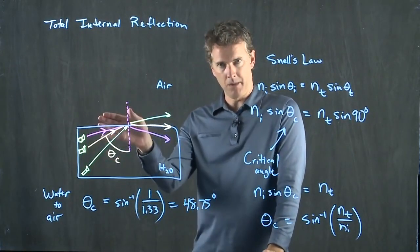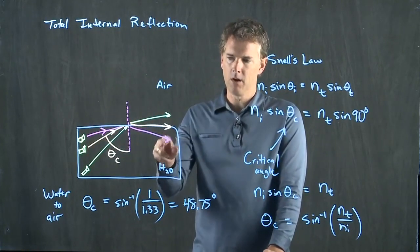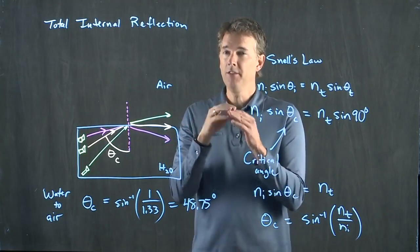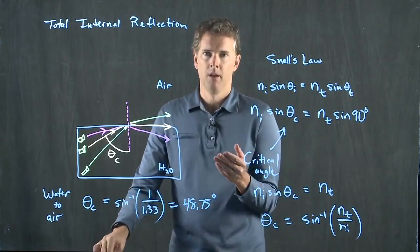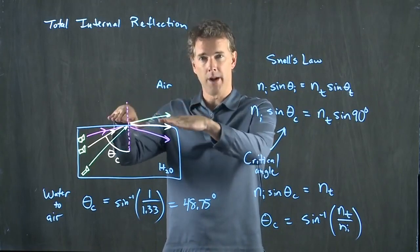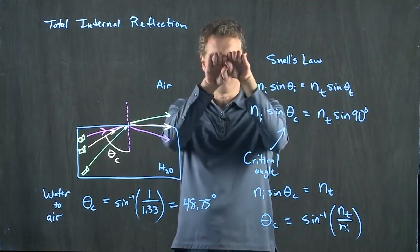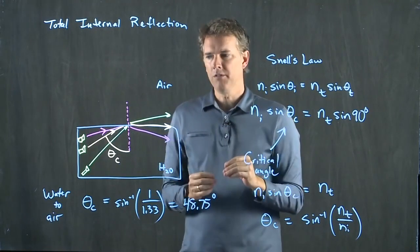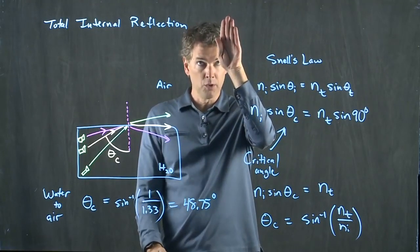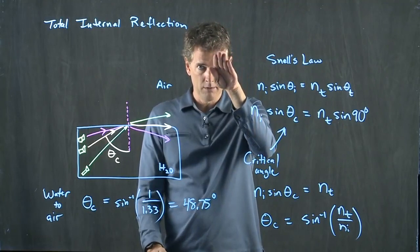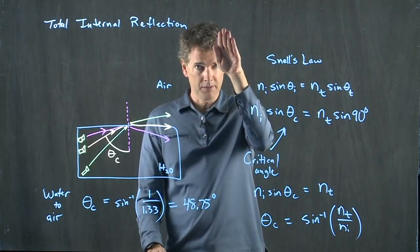Anything higher than that, namely the pink one, you don't have the light exiting the water. It all stays inside the water. And this is a really fun experiment to try. Next time you're at a swimming pool and you can get the water pretty flat and calm, go underneath the water and look across the pool. And what you'll see is, if you look straight up, you can see the sky. As you start to look at an angle further away at that water interface, you can still see the sky.